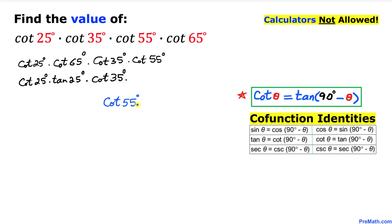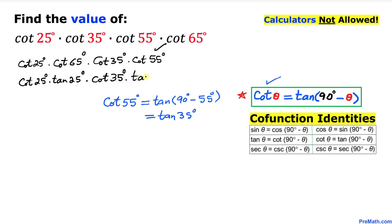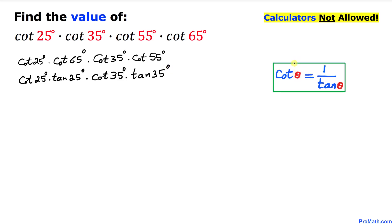Now let's focus on cotangent of 55 degrees. Applying the co-function formula again, cotangent of 55 degrees equals tangent of 90 degrees minus 55 degrees, which equals tangent of 35 degrees. So I replace cotangent of 55 degrees with tangent of 35 degrees.